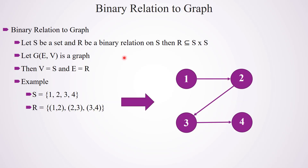Next we are going to study the relation between a binary relation and a graph — how we can convert a binary relation to a graph. Let S be a set and R be a binary relation on S, then R is a subset of S cross S. Let G be a graph with E as the set of edges and V as the set of vertices. Then we can say V equals S — meaning S is the set defined in the relation, V is the vertices, E is the set of edges, and R is the set of relations. So the set of relations can be considered as the edges.